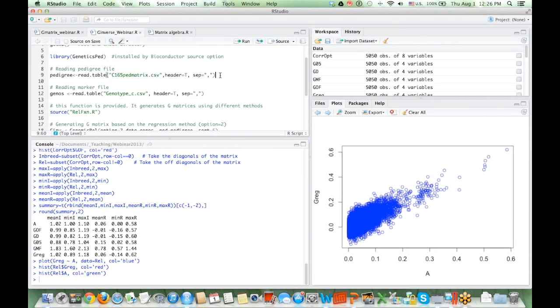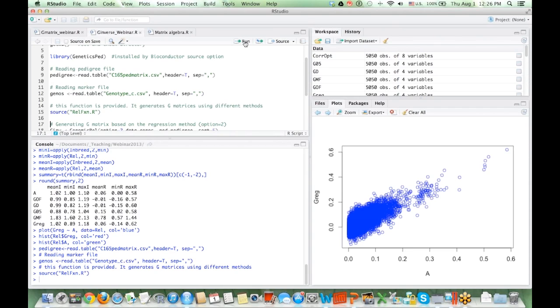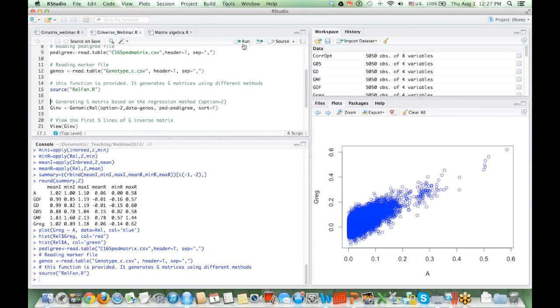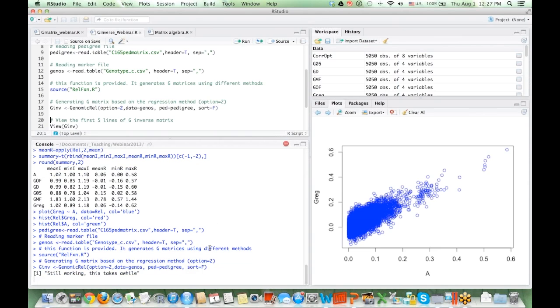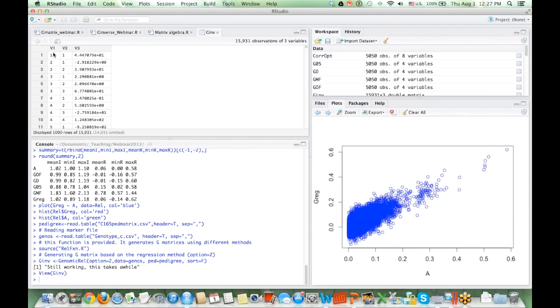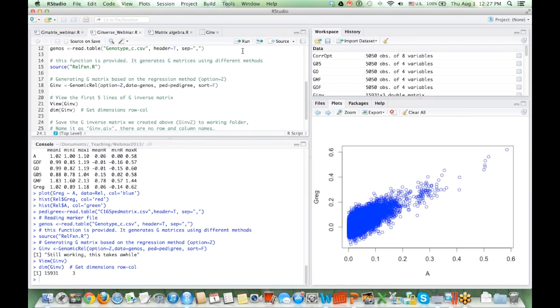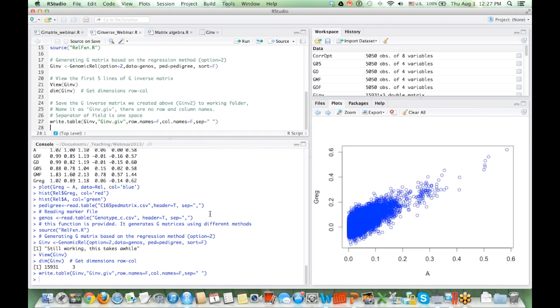So we need to obtain the inverse of one of those G matrices to use in the GBLUP. Here I am using the REL function to calculate the G inverse. And that may take some time, although this is a very small dataset, but for actual datasets it can take some time. So it's done. We can view and then look at the dimensions. And then we can write the table, the inverse matrix for the genomic relationships in our working directory to use for genomic BLUP.